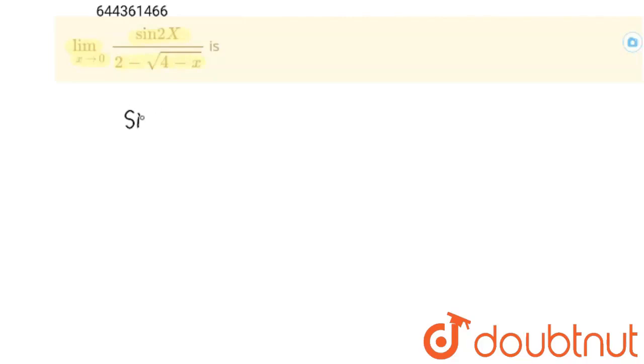I am going to write sin 2x as it is and in denominator 2 minus square root 4 minus x and multiply this with 2 plus square root 4 minus x upon 2 plus square root 4 minus x. And this is limit x tends to 0.